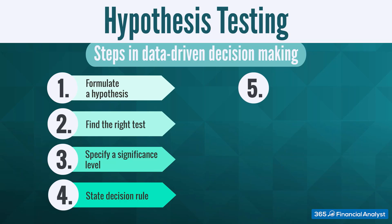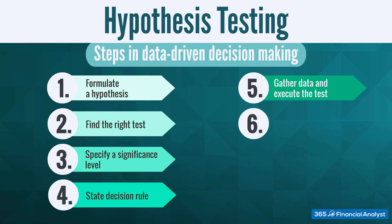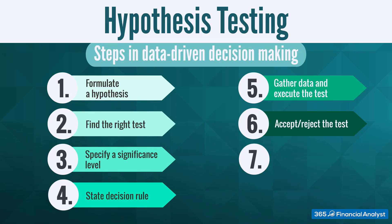The fourth thing we have to do is to state the decision rule. Then we need to gather the data and execute the test. The sixth step is to accept or reject the test from a statistical perspective. And finally, we have to use the statistical insight obtained to make an economic or investment decision.